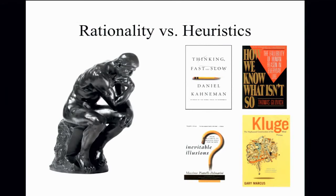These two examples illustrate a framework spanning between the extremes of assuming people are completely irrational and assuming they're just following error-prone heuristics. We can think about these heuristics as effective, rational solutions to the problem of judgment and decision-making with limited computational resources.